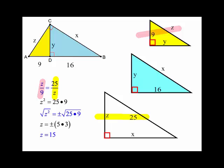Let's go for Z. So Z and 9 correspond with 25 and Z. So I set it up that way, Z over 9 is equal to 25 over Z. Cross multiply, you get Z squared is equal to 25 times 9. And the square root of 25 is 5, the square root of 9 is 3. So Z is 15. That was an easy problem.